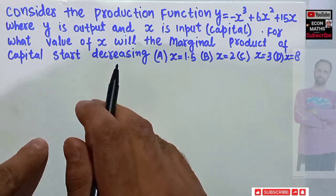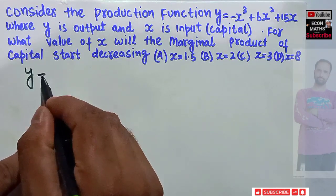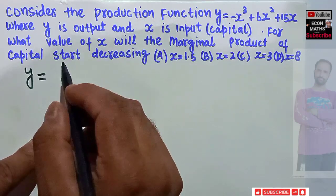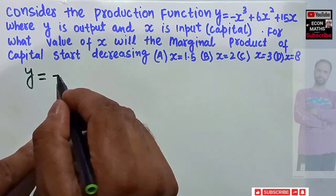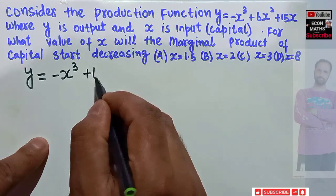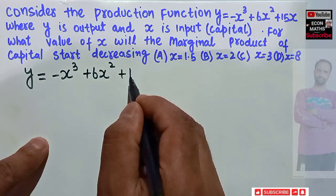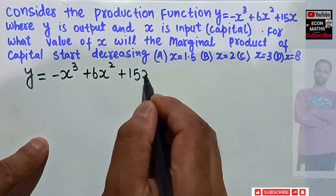So first of all, what are we being given? We are being given the production function, that means output is a function of capital here, that is -x³ + 6x² + 15x. This is our production function.